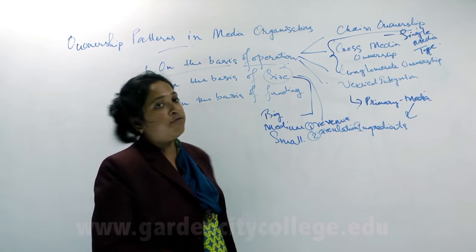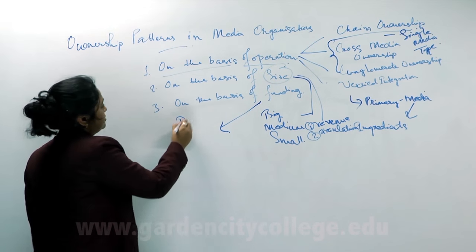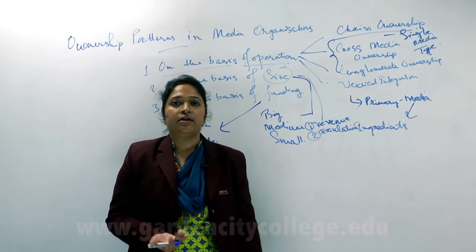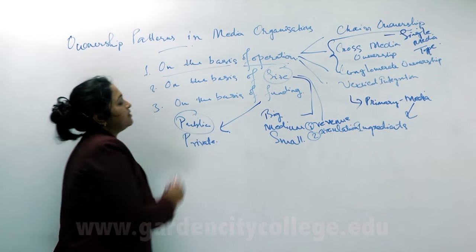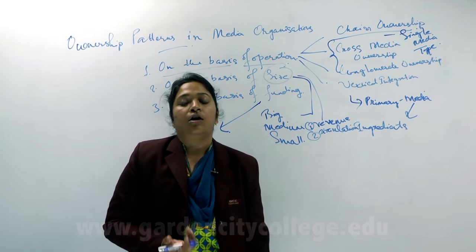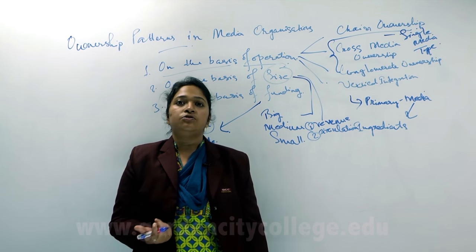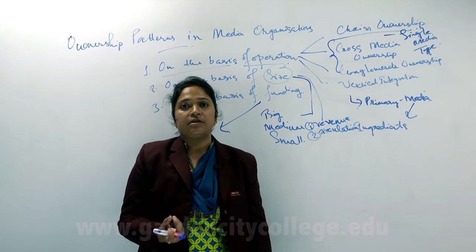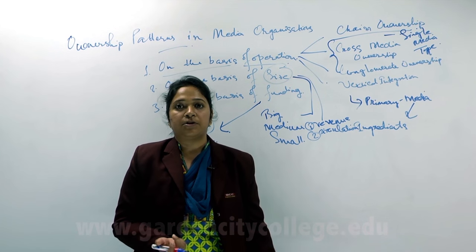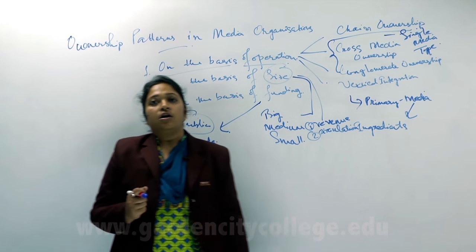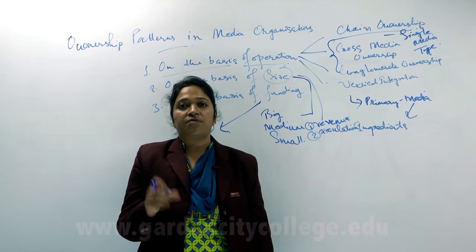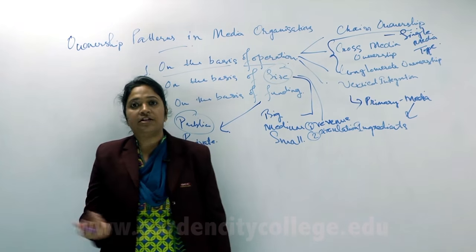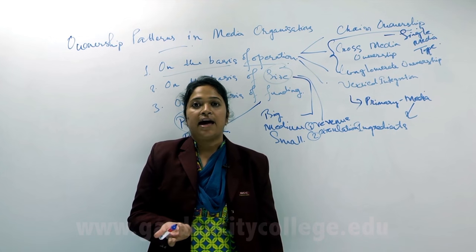Finally, we come to the basis of funding. Funding can be of two types: public and private. In terms of public funding, we are talking about government-controlled news media organizations. Here, the examples are Doordarshan and All India Radio. There is no private stake or ownership in those particular channels and radio stations. The government is providing funding for Doordarshan and All India Radio, and their control over content, treatment of programs, and advertisements — everything comes from the government.